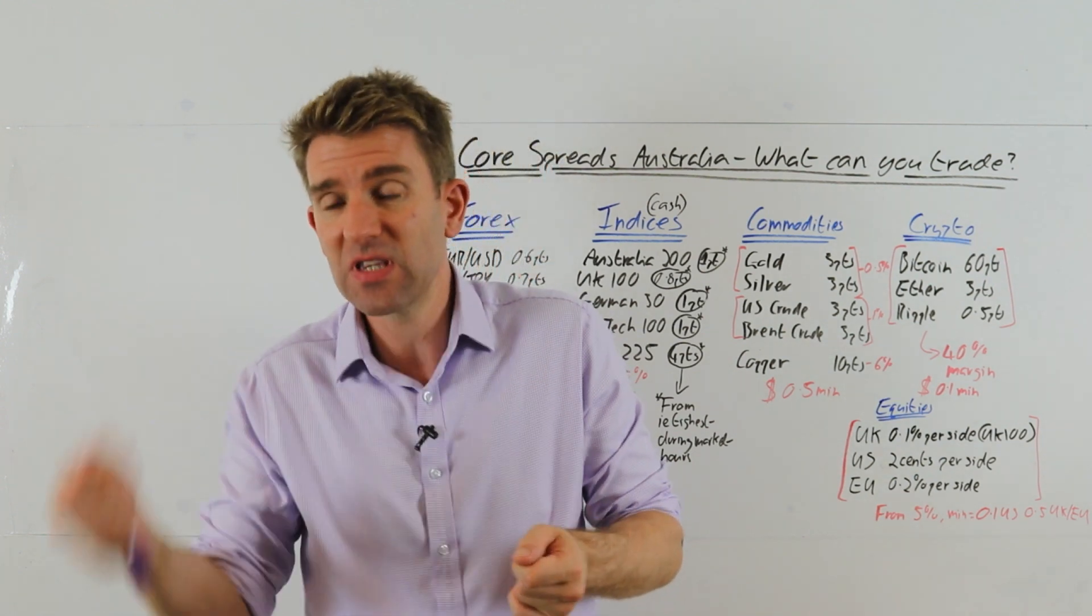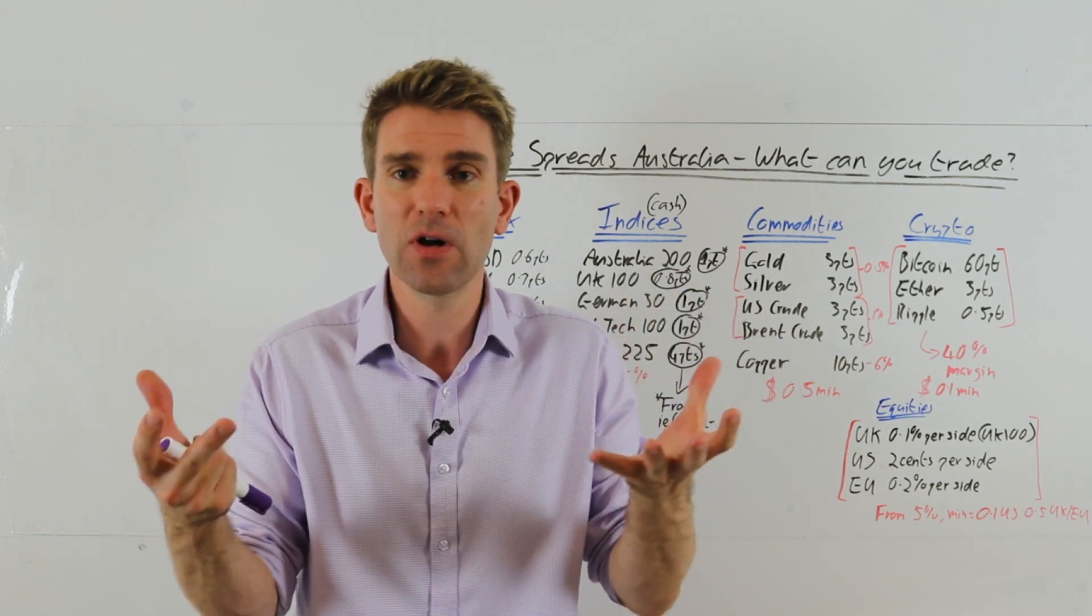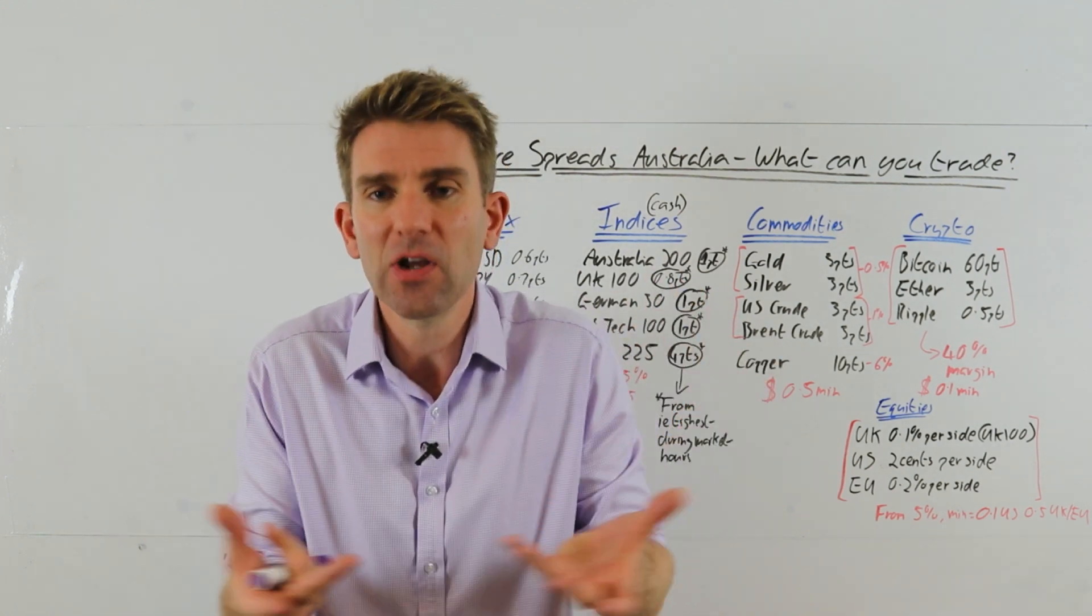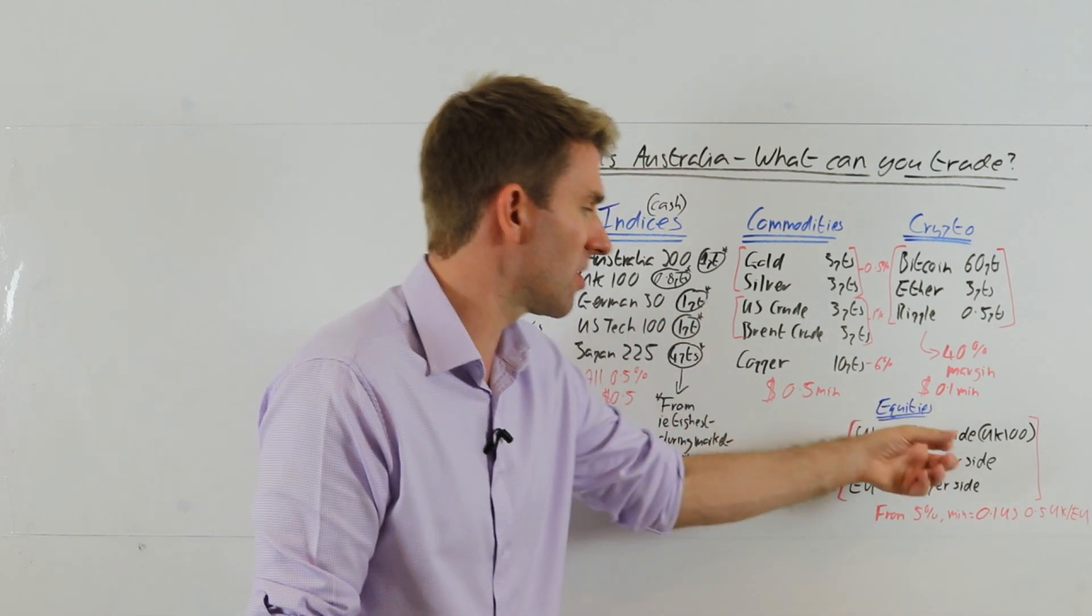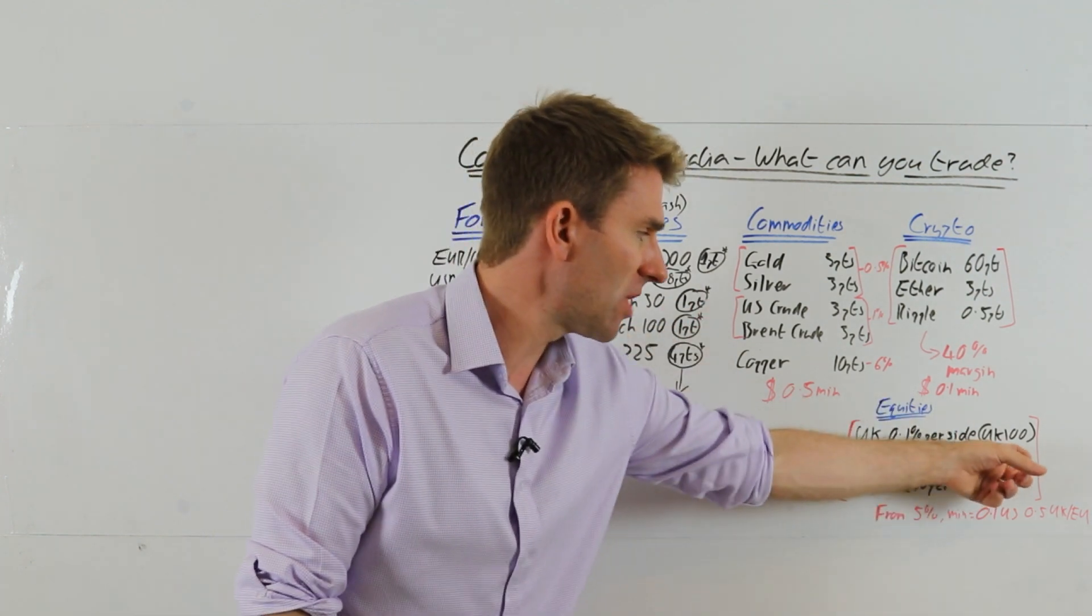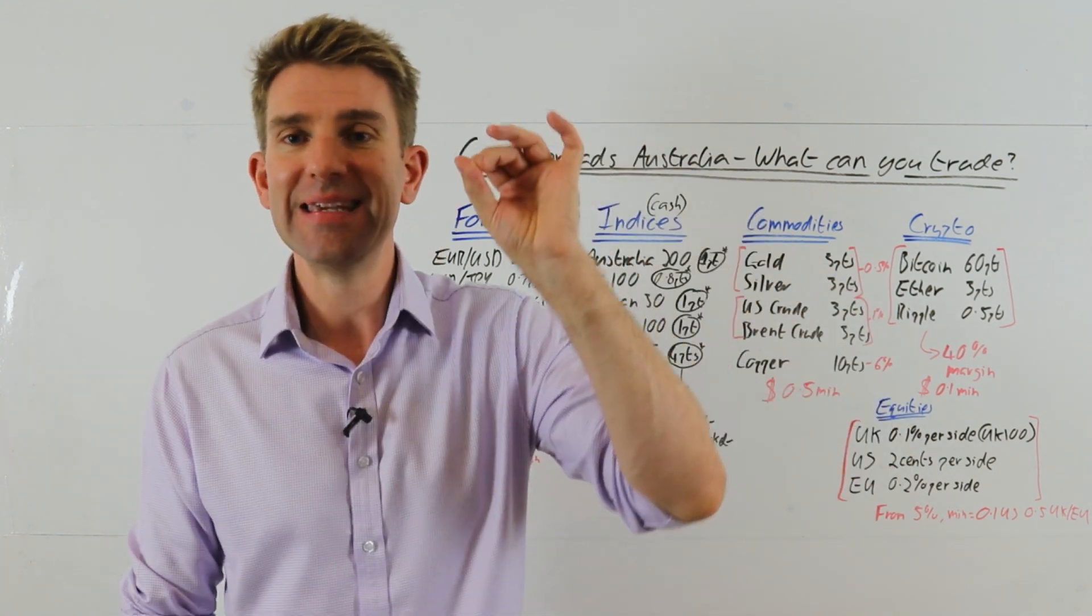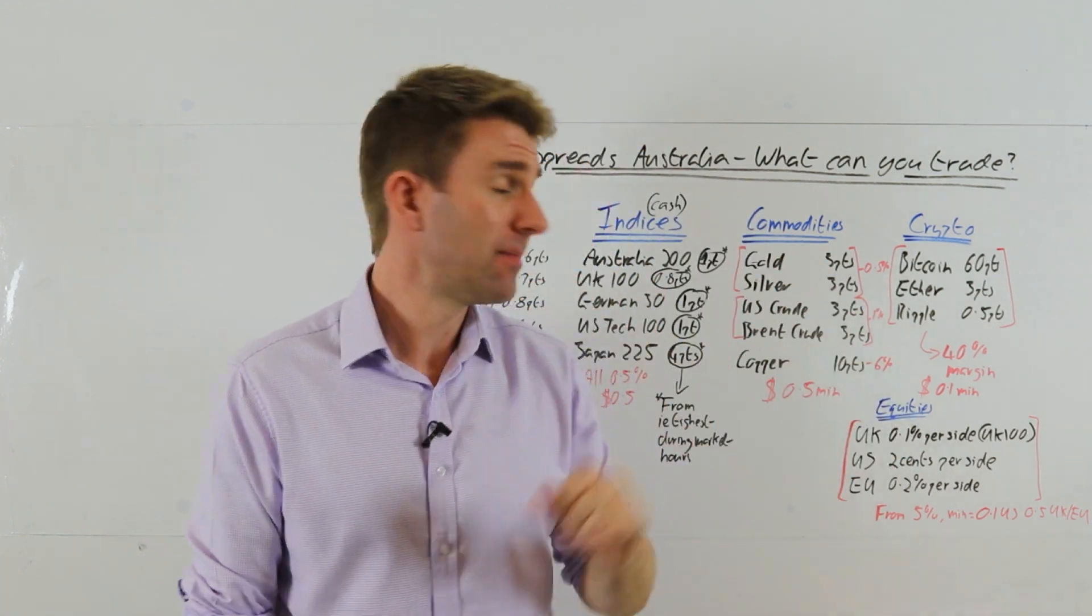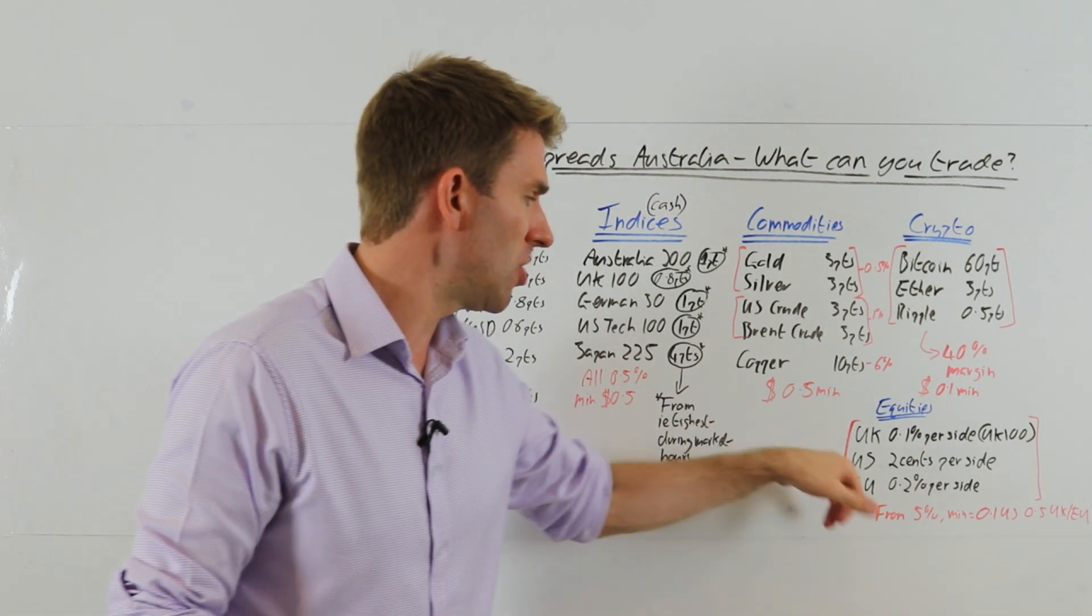Core Spreads Australia will add 0.1% onto the ask and 0.1% under the bid. So that would be the buy price and the sell price. That's how they're making their money. So you've got the market spread, the underlying market spread, and their additional spread. So 0.1% per side for UK 100, and I think it goes to 0.2% for the UK 250. But again check it out if you're interested in trading something wider from the Footsie 250 range. US: 2 cents a side. And EU stocks: 0.2% per side.